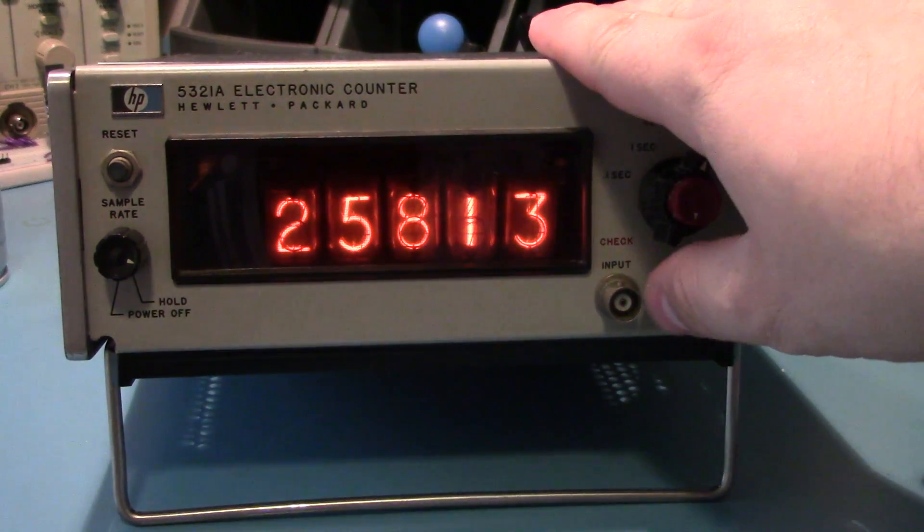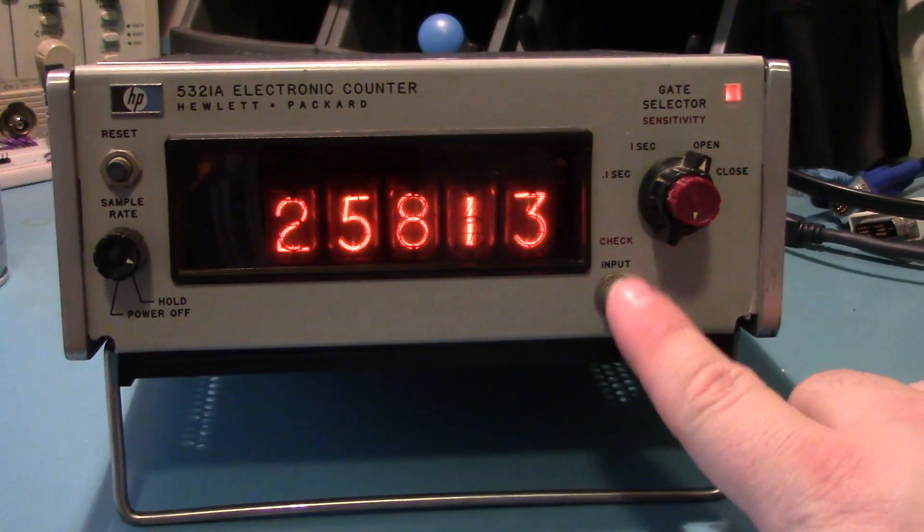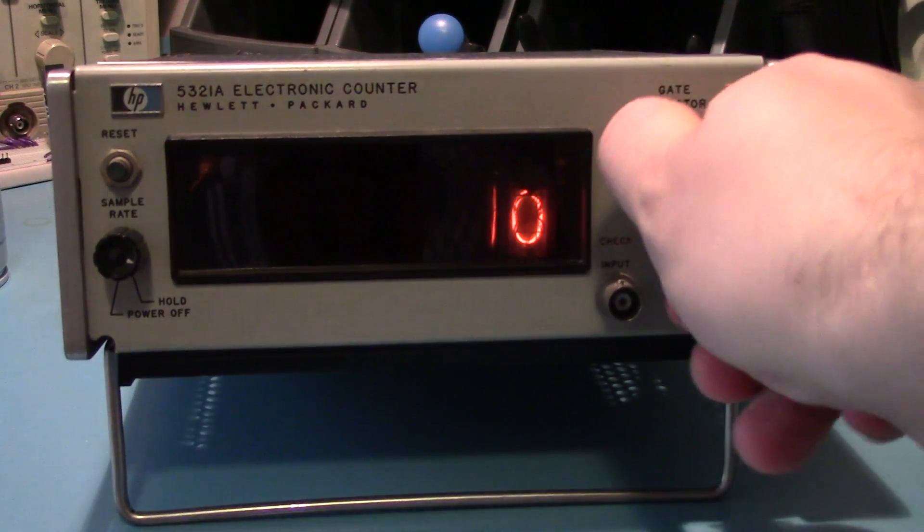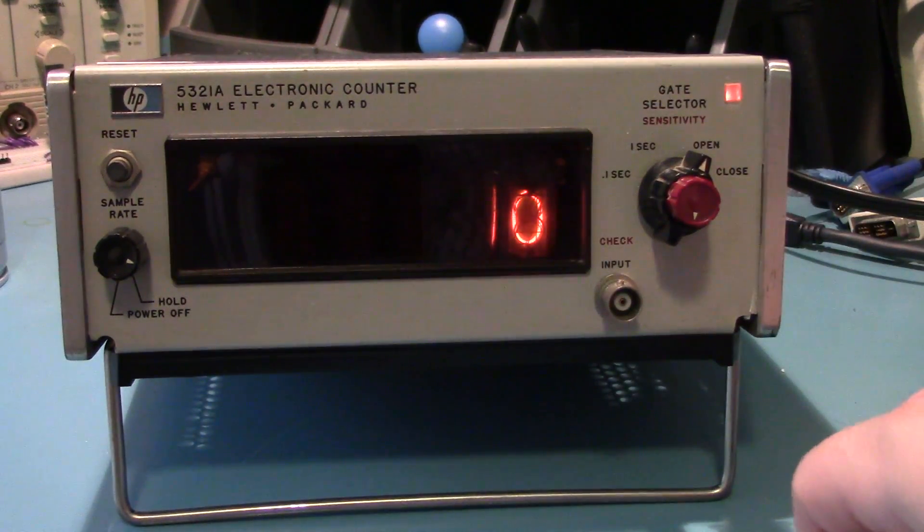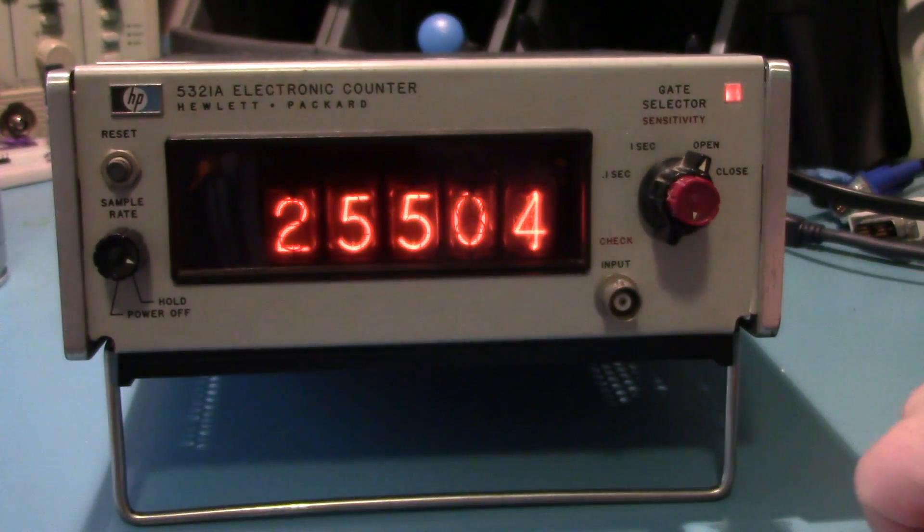An electronic counter simply counts the number of pulses into its connection and you can gate it and stuff like that. This has different settings and whatnot that I haven't really played around with. Let me get a couple of these lit up. There we go.